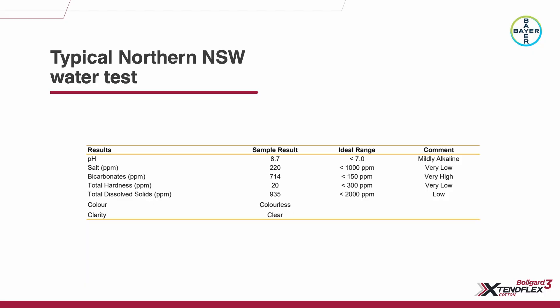Water like this is a real challenge for a farmer sprayer. Time in tank will cause further degradation of chemistry. Taking bicarbonates in isolation, once you get above 150 ppm bicarbonate, you are impacting your Group A — now Group 1 — and your Group I — now Group 4 — chemistries.